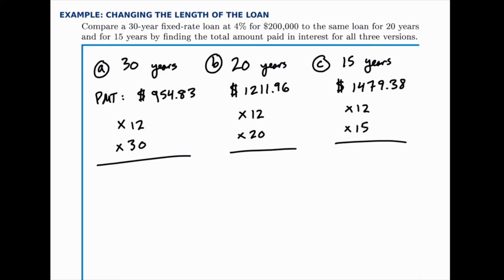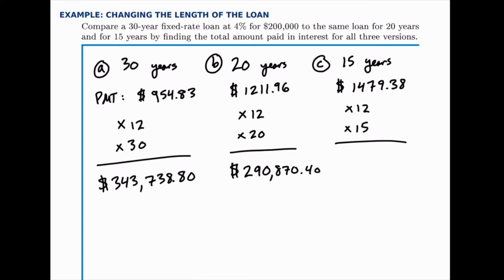In the first case, the monthly payment times 12 times 30 works out to $343,738.80. The second example, the total amount paid is $290,870.40. And the last case, that's $266,288.40.